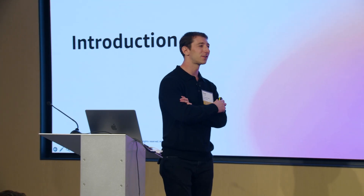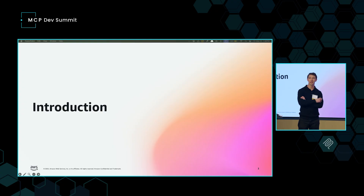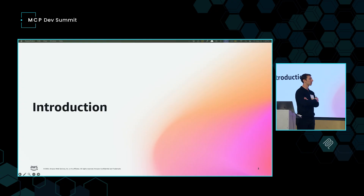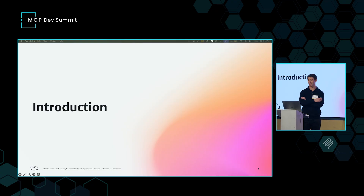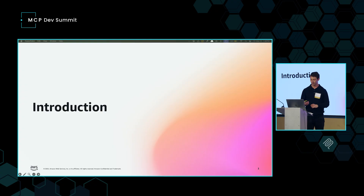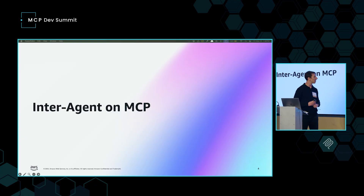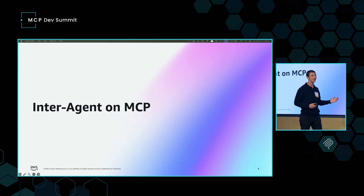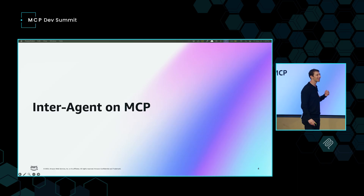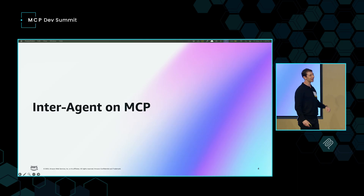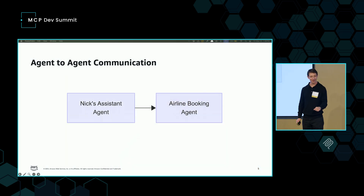My name is Nick Aldridge. I'm a principal engineer at AWS in the generative AI team. I'm part of the MCP steering committee. I work with really smart people like Mark Brooker and Swabhi Siv-Sumaranian, and I'm super excited to be here today. The topic of this talk is interagent communication on MCP. This is a controversial topic. My views are my own today. The steering committee downstairs is probably going to be upset at me, but that's okay.